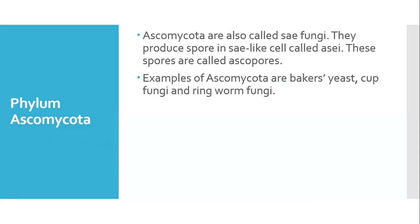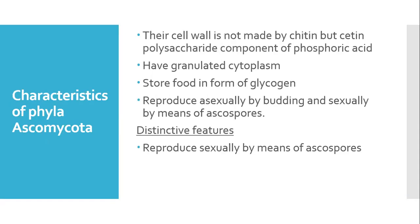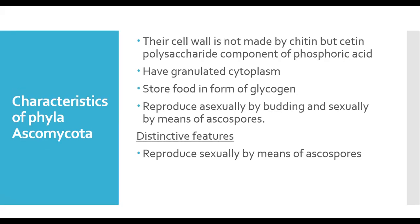The characteristics of phylum Ascomycota: their cell is not made up of chitin but certain polysaccharide components. They have granulated cytoplasm, they store food in the form of glycogen, and they reproduce asexually by budding. Their distinctive feature is that sexual reproduction is by means of ascospores.